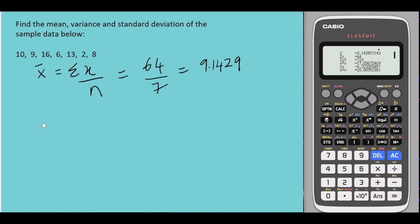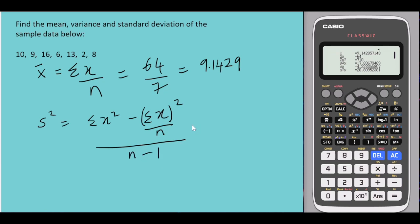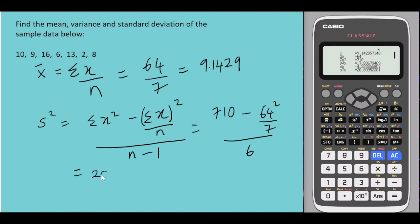For the sample variance, the formula is: the summation of x squared minus the quantity (summation of x) squared over n, all divided by n minus 1. The summation of x squared is 710, so we get 710 minus 64 squared over 7, divided by 6, which gives 20.8095.